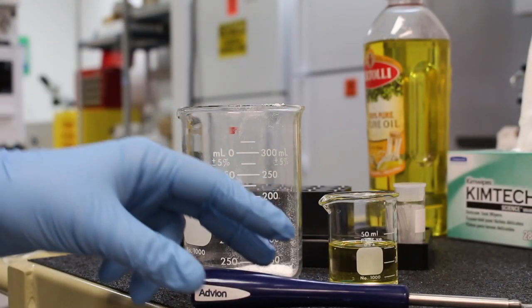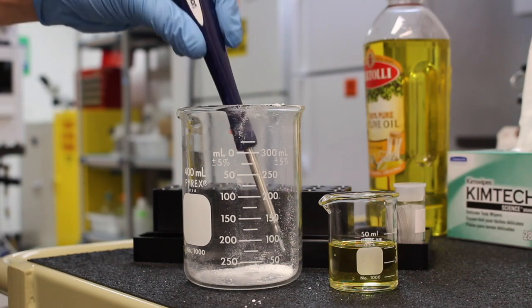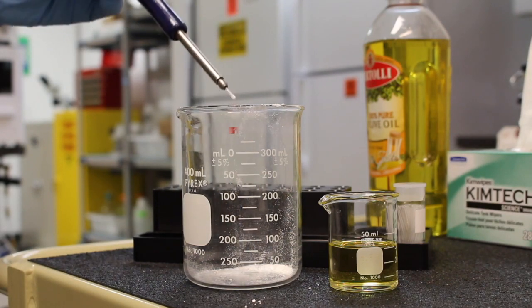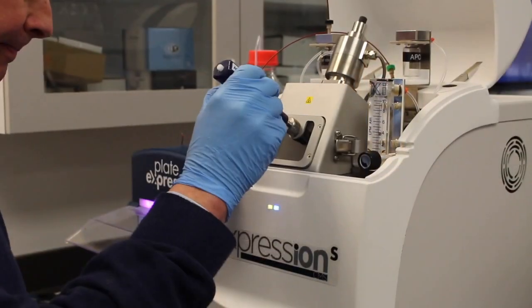Chemists simply dip the tip of the closed end of a glass capillary into the sample of interest or scrape the surface of a solid and then place the capillary into the mass spectrometer.